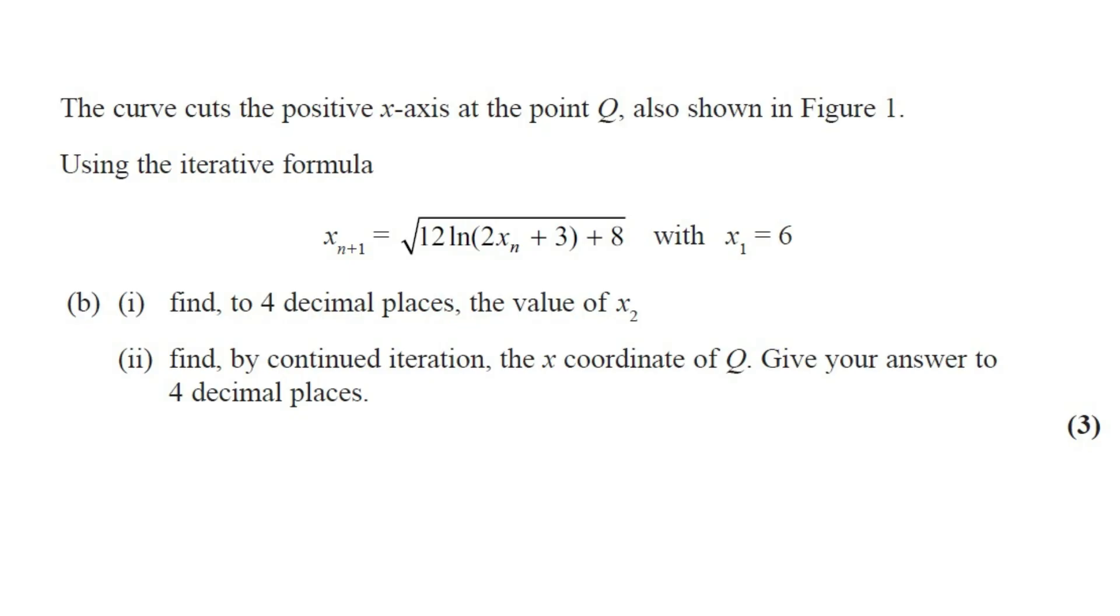The curve cuts the positive x-axis at the point Q also shown in figure 1. Now, using the iterative formula, x(n+1) equals square root of 12 ln(2x_n plus 3) plus 8 with x1 equals 6. Part b(i): find to 4 decimal places the value of x2. Part b(ii): find by continued iteration the x-coordinate of Q. Give your answer to 4 decimal places. This question got 3 marks.